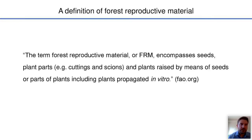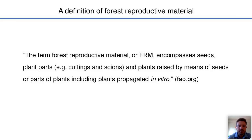Starting with the FAO definition of forest reproductive material: the term forest reproductive material, or FRM, encompasses seeds, plant parts such as cuttings and scions, and plants raised by means of seeds or parts of plants, including plants propagated in vitro. So basically all possible materials used for planting teak fall under the term FRM.